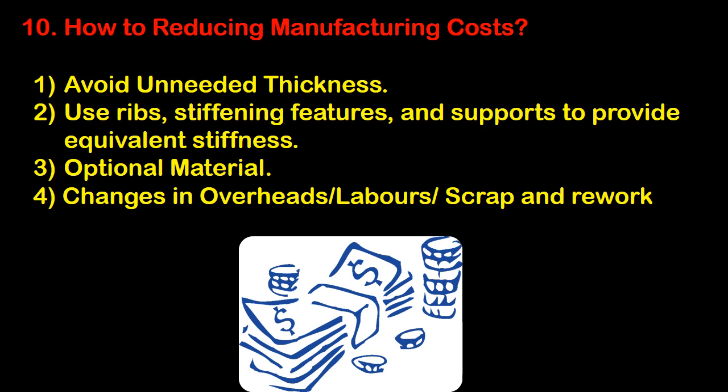Question number ten: how to reduce manufacturing cost? First, avoid unneeded thickness. Second, use ribs, stiffening features, and supports to provide equivalent stiffness. Also consider optional material changes and reductions in overheads, labor cost, scrap, and rework.